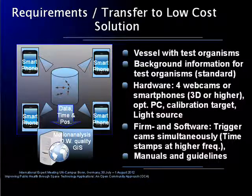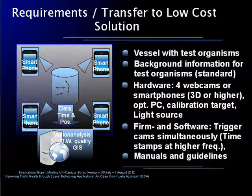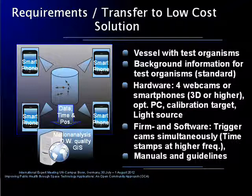Let me shortly present an outlook on how we can transfer our system and method to a low-cost solution. The most important requirement is the vessel with the test organisms, where we know how they react to external stressors like toxic substances. The necessary hardware of this low-cost motion tracking device strongly depends on the test organisms themselves. If it is essential to observe motion or any other characteristic like color in three or more dimensions, one needs at least four perspectives. The cameras can be very simple, like webcams or cameras in smartphones, but should be triggered simultaneously.